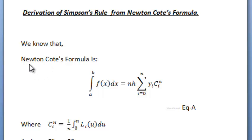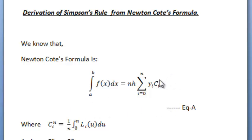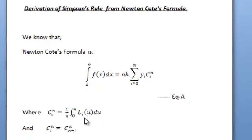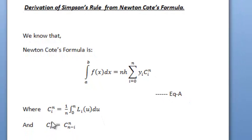We know that the Newton-Cotes formula states that the integration from a to b of f dx equals nh times the summation from i equals 0 to n of y_i times c_in, which is equation (a), where c_in equals 1/n times the integral from 0 to n of l_i of u du. Also, c_in equals c_(n-i)_n.